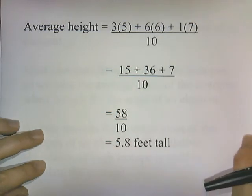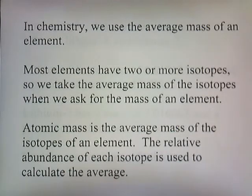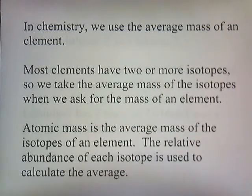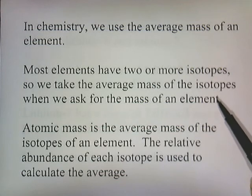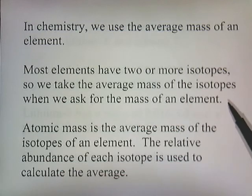And the same thing is done when you figure out atomic mass. In chemistry, we use the average mass of an element. Most elements have two or more isotopes, so if you ask how much does a certain atom weigh, well, which atom? This isotope or that isotope of the atom? Well, you take the average.